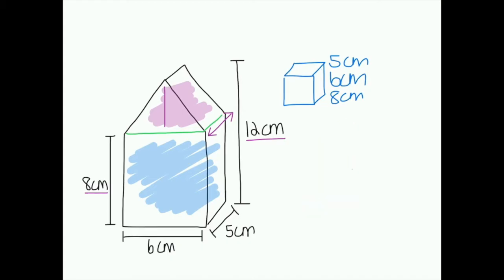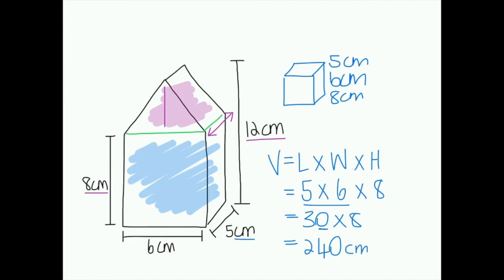The first calculation that I'm going to make is the volume of the rectangular prism. The formula to calculate the volume of a rectangular prism is volume equals length times width times height. So I'm going to say that my length is 5cm, my width is 6cm, and my height is 8cm. 5 times 6 is 30 times 8, 3 times 8 is 24, and times that by 10 gives me 240. I'm dealing with centimeters and I'm dealing with volume, so that measurement is cubed.